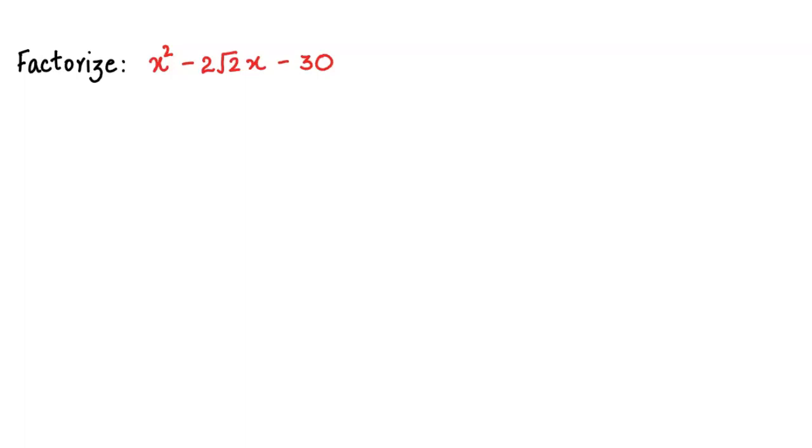Here we can see that the sum should be -2√2 and the product should be -30. So let's go ahead and write factor pairs of 30, or rather -30.